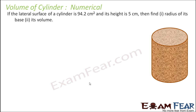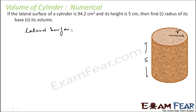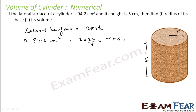The next question: the lateral surface of a cylinder is 94.2 centimeter square and the height is 5 centimeter. Find the radius and the volume. The lateral surface area is 2πrh. Putting the value: 94.2 = 2 × 22/7 × r × 5. Solving this, we get r = 3 centimeter.